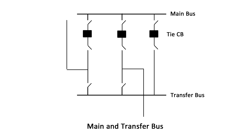One or more circuit breakers may be used in this arrangement to make connections between the main and transfer bus. When no tie circuit breaker is present, for maintenance of a circuit breaker, the transfer bus is energized by closing the isolator switches to the transfer bus.